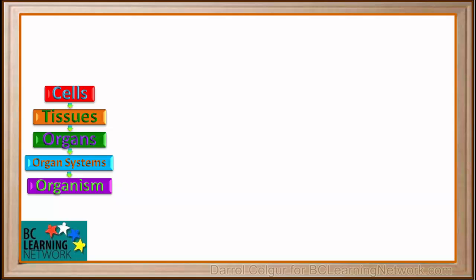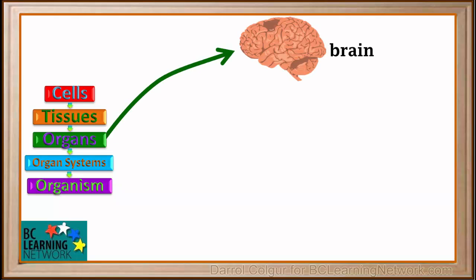Organs are made up of groups of different tissues that work together to perform a specific activity or set of activities. The brain is one organ. It has a lot of nerve tissue, but also contains other types of tissues.